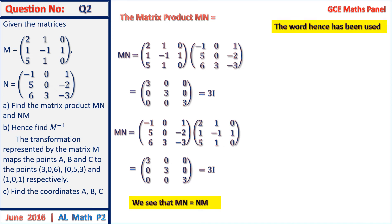The question continues: find M inverse. The word 'hence' means we must use the previous solution. Using the identity MN equals 3I, we have M times one-third N equals I. Since the product of two matrices giving the identity implies one is the inverse of the other, M inverse equals one-third of matrix N.